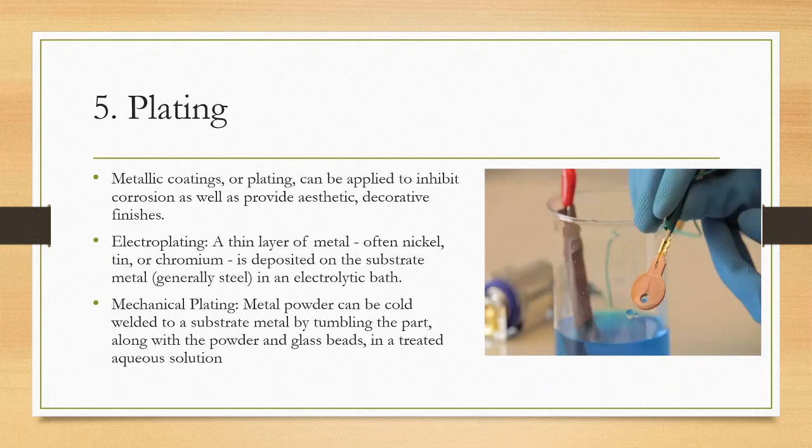Plating: Metallic coatings or platings can be applied to inhibit corrosion as well as to provide aesthetic decorative finishes. Electroplating: A thin layer of metal, often nickel, tin, or chromium, is deposited on the substrate metal in an electrolytic bath. The electrolyte usually consists of water solution containing salt of the metal to be deposited.